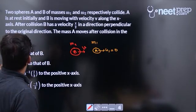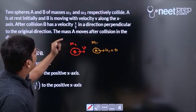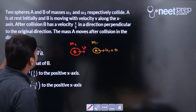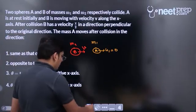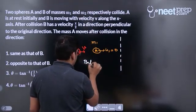After the collision, B has a velocity v by 2 in a direction perpendicular to the original direction. This scenario is before collision, dear students.